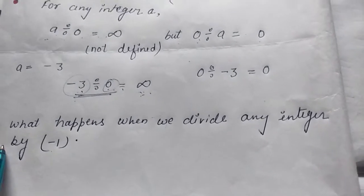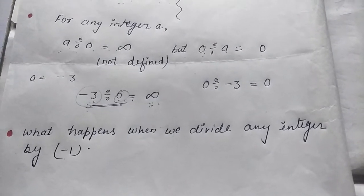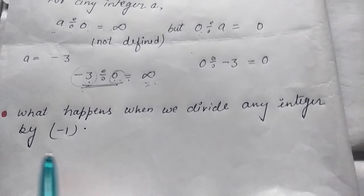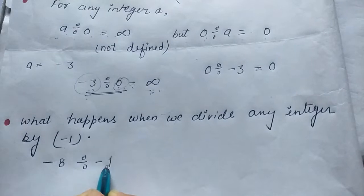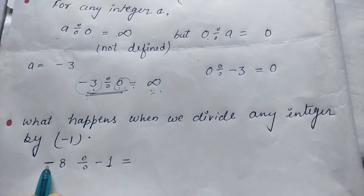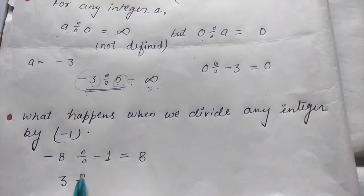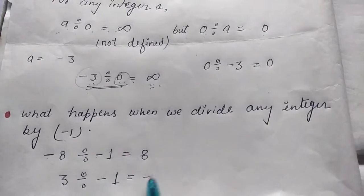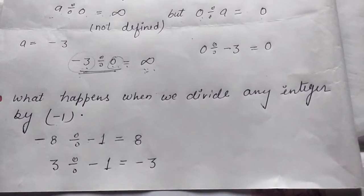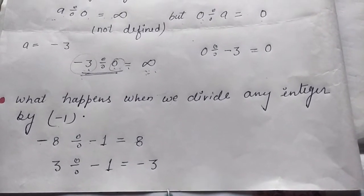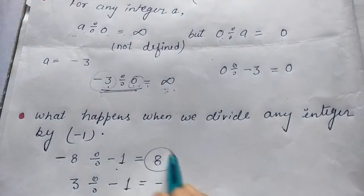Now the next property: what happens when we divide any integer by minus 1? Kya hota hai jab hum kisi bhi integer ko minus 1 se divide karte hain? For example, minus 8 divided by minus 1 — minus minus is plus, so the answer is 8. If 3 divided by minus 1, then the answer is minus 3. So we can say that if any integer is divided by minus 1, it does not give the same answer.